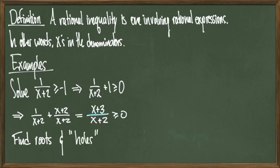Our next step is to find the roots and to find the holes in this inequality. All I did was take the inequality I was given and move some things around algebraically so that I have 0 on one side and my expression on the other. Now we'll talk about what I mean by roots and by holes. A root is a number that I plug into this expression that gives me exactly the number 0. A hole is a particular x value that forces the denominator to be equal to 0.